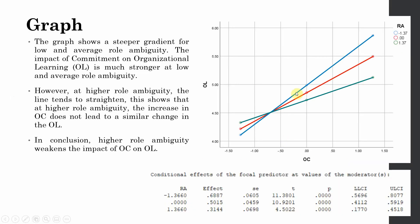Now let's interpret the graph. The blue line represents low role ambiguity, the red line average, and the green line high role ambiguity. The green line is straightening, meaning that at a high level of role ambiguity, the impact of organizational commitment on organizational learning is much weaker — almost half of what it is at low role ambiguity. The graph shows a steeper gradient for low and average role ambiguity, so the impact of commitment on organizational learning is much stronger at those levels.